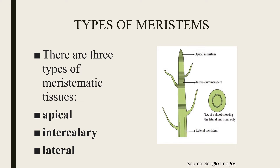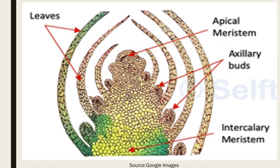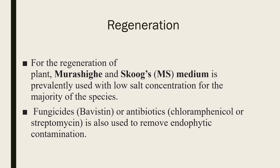We have apical meristem, intercalary meristem, and lateral meristem. Under apical meristem we have shoot apical meristem and root apical meristem. You can visualize the shoot apical meristem in this particular picture — these are the axillary parts, and here we have the small leaf primordia. We take one or two primordia and utilize them, applying a V-shaped cut. Here we have the intercalary meristem, visible right below.